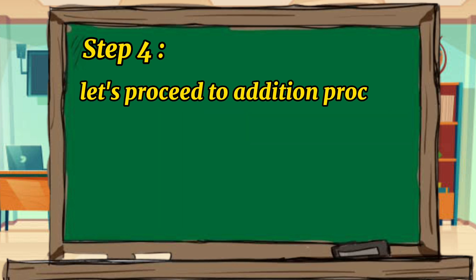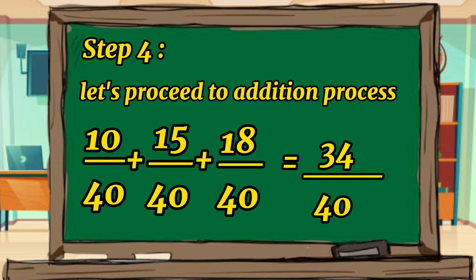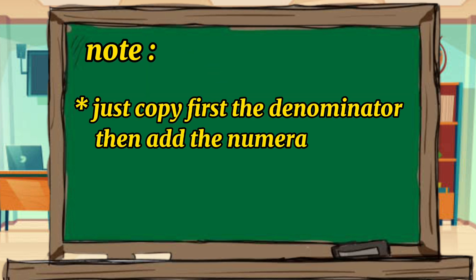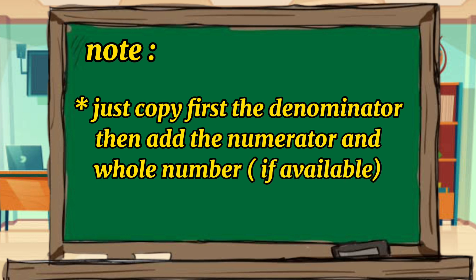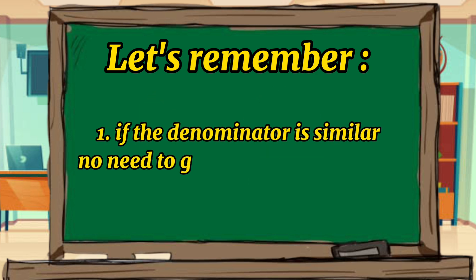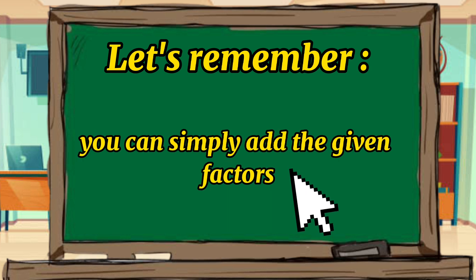So, 10 over 40 plus 15 over 40 plus 18 over 40 equals 43 over 40. Let's note this: copy first the denominator, then add the numerators. Let's remember this. If the denominator is the same or similar, no need to get the common factors or the LCD. You can proceed to the addition process.